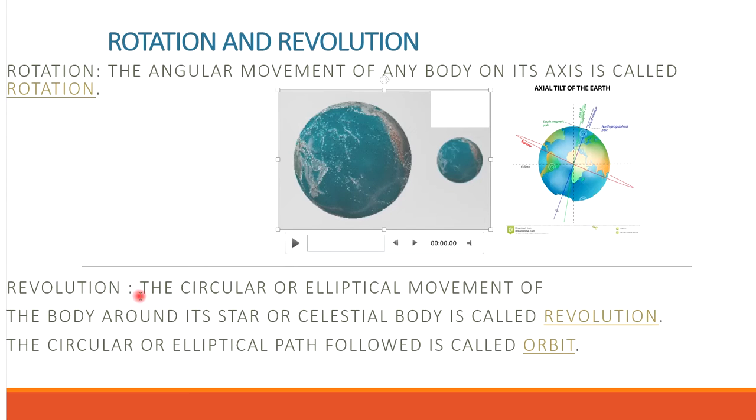Now let's see what is revolution. The circular or elliptical movement of the body around its star or celestial body is called revolution.